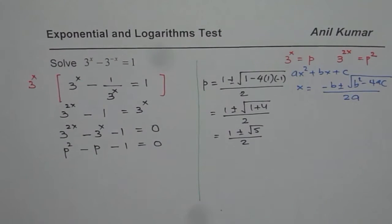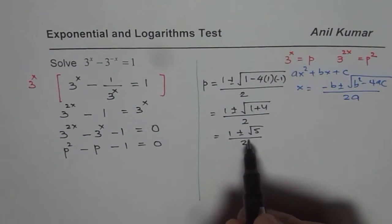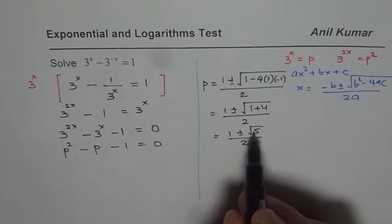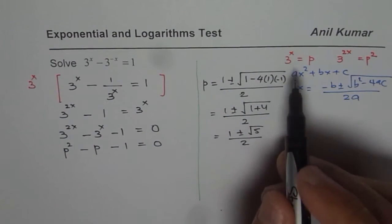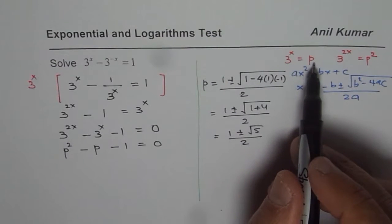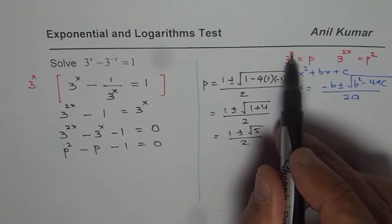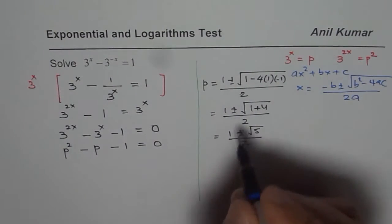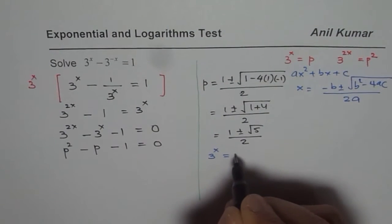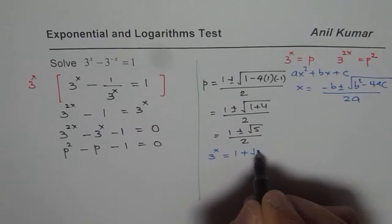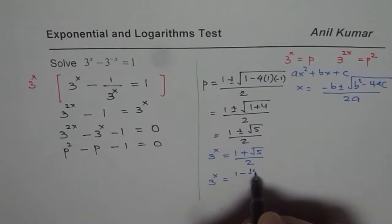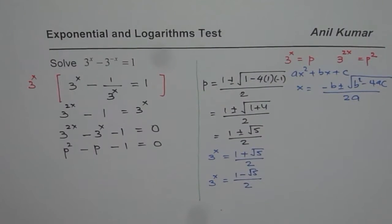So that is the value of p. We get two different values of p: one is (1 plus square root of 5) over 2, and the other one is (1 minus square root of 5) over 2. Now as far as the exponent is concerned, we have p equals to 3 to the power of x, meaning 3 to the power of x could be equal to these two values. So we have two solution equations.